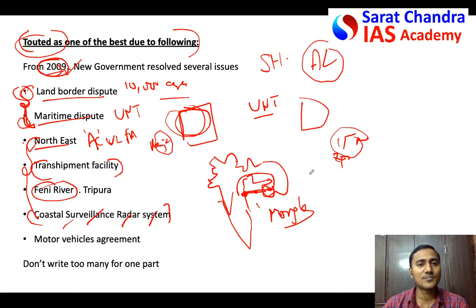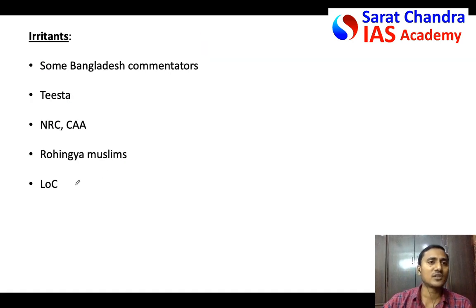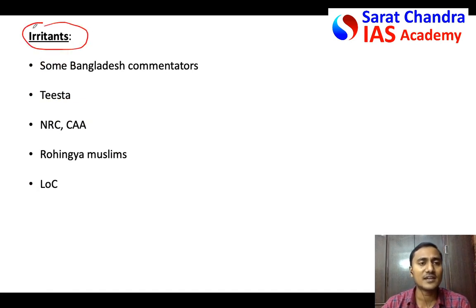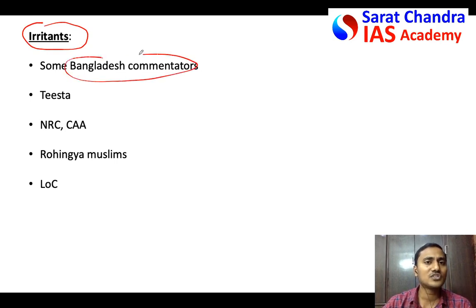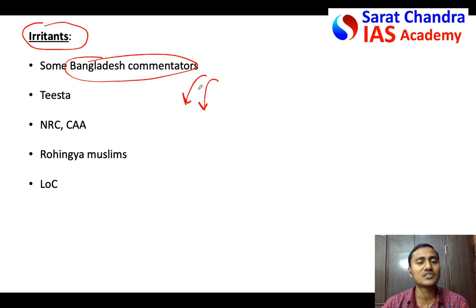As it is a 15-mark answer with three parts, almost five marks per part, you need to write only about one page on each part. Write the major issues and stop — don't try to write all the issues you know. Now come to the second part: what are the major irritants? Focus on the major ones. Some Bangladeshi commentators feel that India has not reciprocated the good gestures Bangladesh has shown towards India.